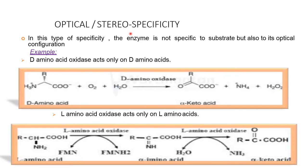Optical stereo specificity. In this type of specificity, the enzyme is not only specific to the substrate but also to its optical configuration. D-amino acid oxidase acts on D-amino acids, and L-amino acid oxidase acts on L-amino acids.